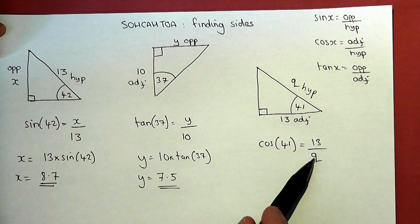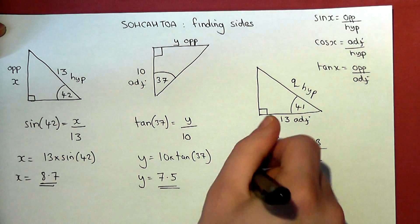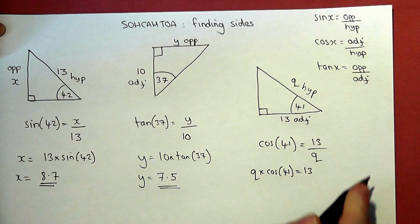So to rearrange this requires two steps. I first of all multiply up by q. So q times cos 41 is equal to 13.